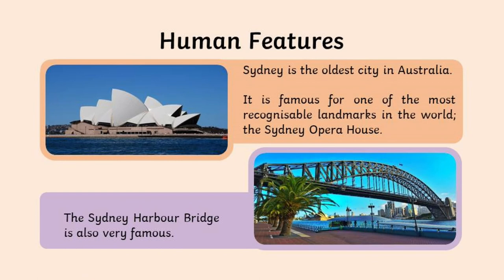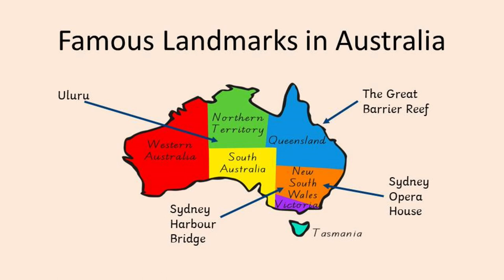Australia also has famous landmarks that are human features, such as the Sydney Opera House. This is located in Sydney, which is the oldest city in Australia and one of its most recognisable landmarks. You also have the Sydney Harbour Bridge, another famous architectural landmark from Australia. This map gives you a quick guide as to where those human and physical features are found, and also shows clearly how Australia is divided into its seven territories, represented on the Commonwealth Star on their flag.